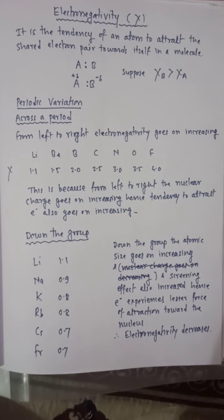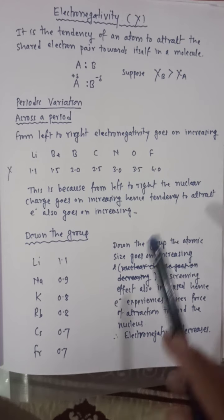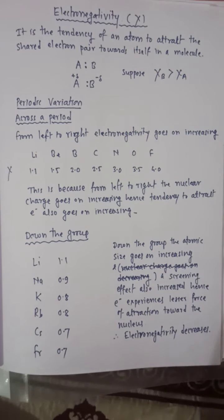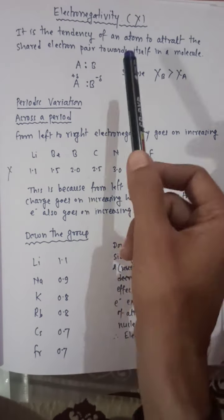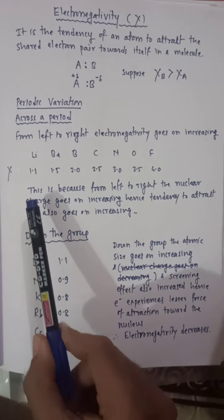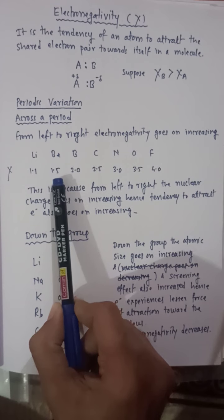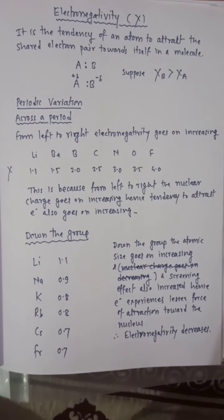Across a period, from left to right, electronegativity goes on increasing. The reason is the same — atomic size decreases and nuclear charge increases, so the tendency to attract electrons is greater. Lithium has 1.1, beryllium 1.5, and it goes on increasing consistently, with fluorine having the highest electronegativity of 4.